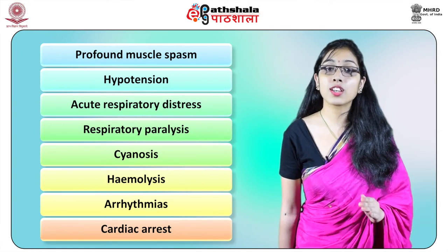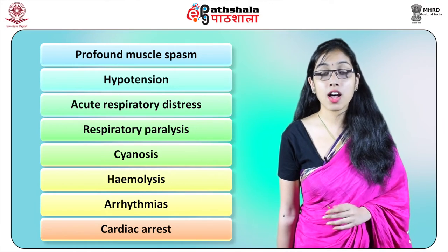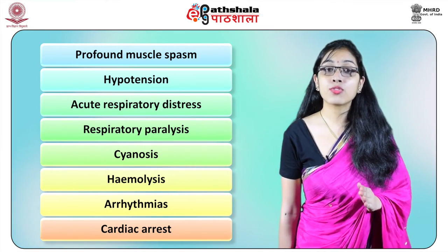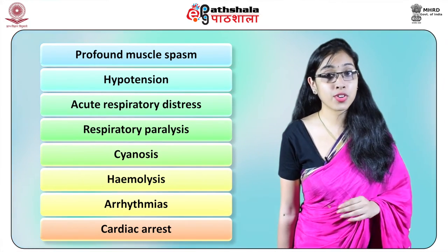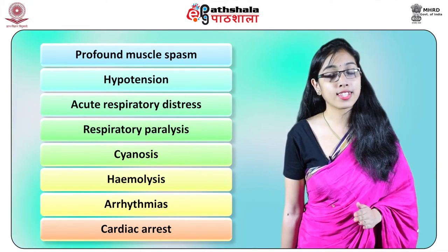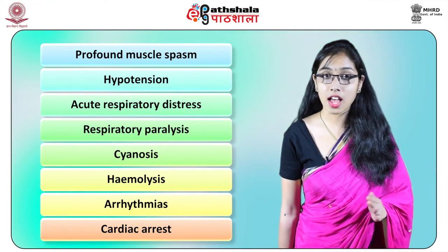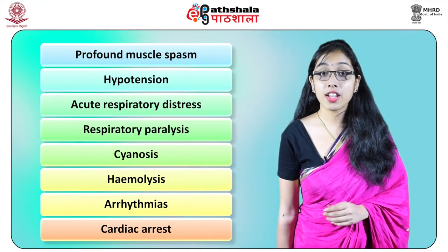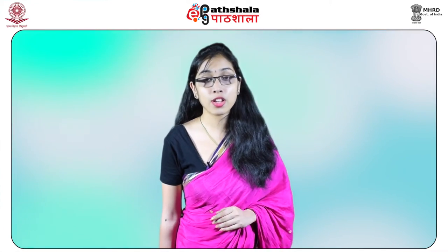Features include profound muscle spasm, hypertension, acute respiratory distress, respiratory paralysis, sinusitis, hemolysis, erythema and cardiac arrest. Severe parasympathetic dysfunction including abdominal distention, urinary retention and dry eyes is common. Death can occur in less than a minute.